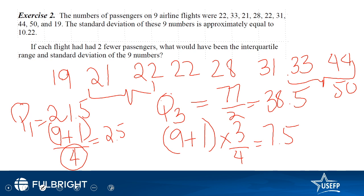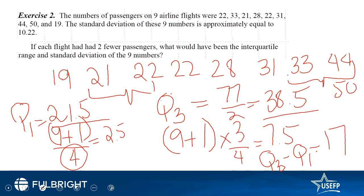The interquartile range is Q3 minus Q1: 38.5 − 21.5 = 17. Now, if everything decreases by two, what is the new interquartile range? Since all terms decrease by two, the differences remain the same, so the interquartile range stays at 17.